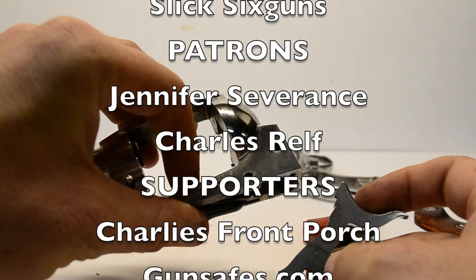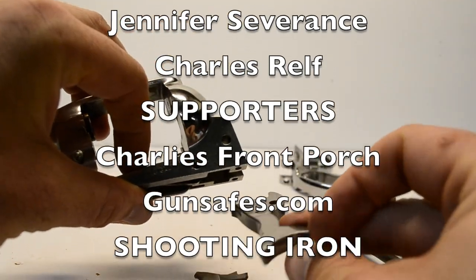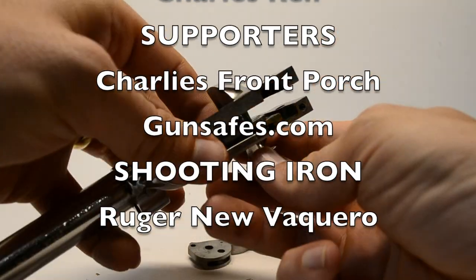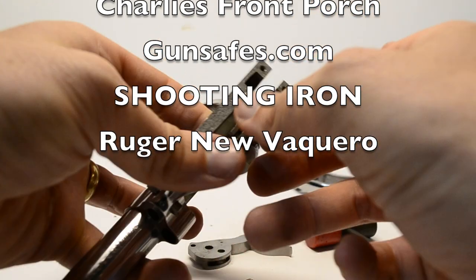Once the pin is removed, use gravity to remove the hammer, hand, trigger, transfer bar, loading gate, gate detent spring, and cylinder latch assembly.